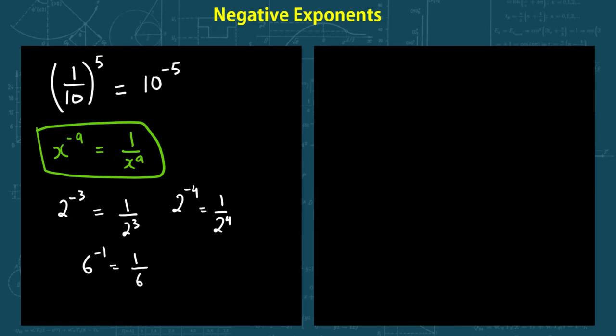What if you have a negative exponent in your denominator? Let's see this example: 1 over 3 to the power of negative 4. Simple — you bring it up and make it positive. So this is actually equal to 3 to the power of 4.